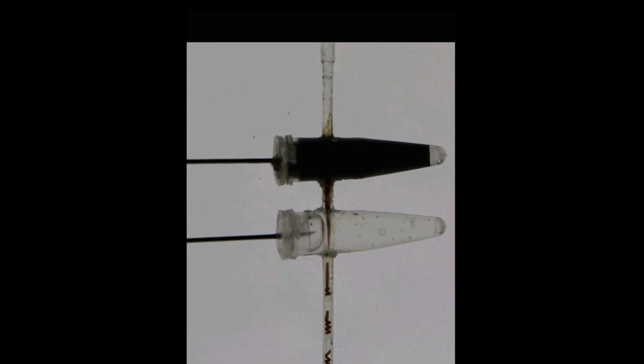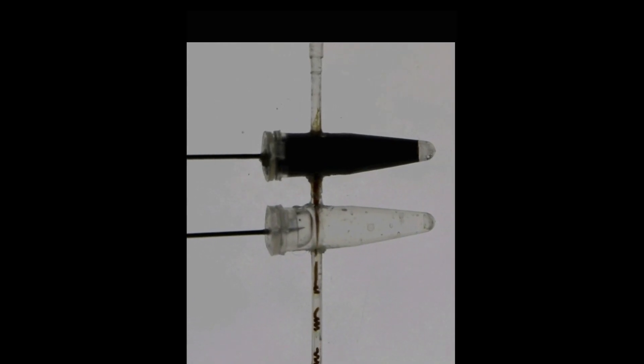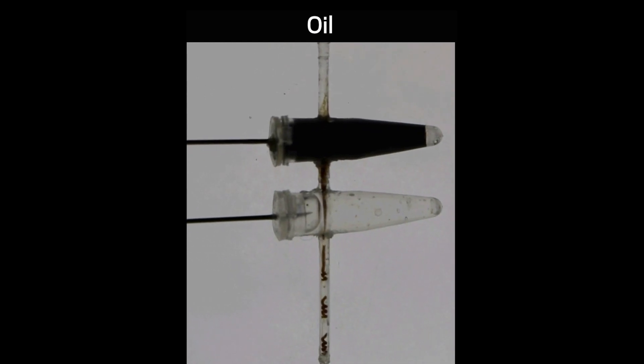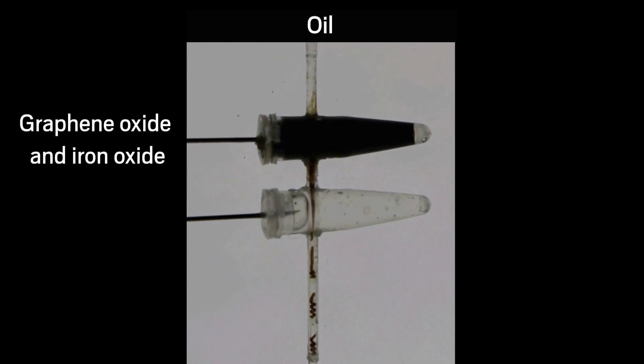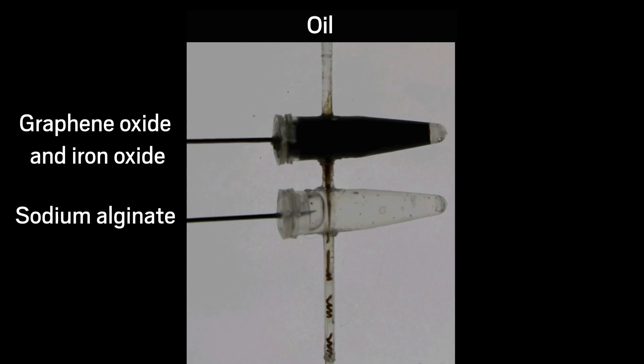To make the micromotors, the team developed a cheap microfluidic method. The team pumps oil through a solution of graphene oxide and magnetic iron oxide, and a solution of sodium alginate. What comes out are tiny corkscrews with an oil droplet head attached to a graphene oxide-based tail, all of which are sealed inside a sodium alginate fiber.